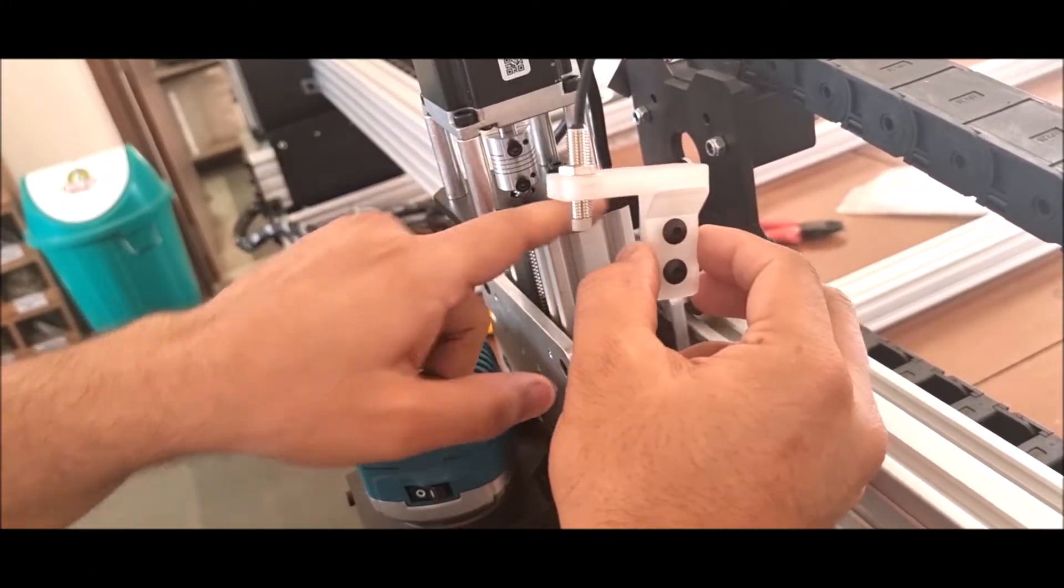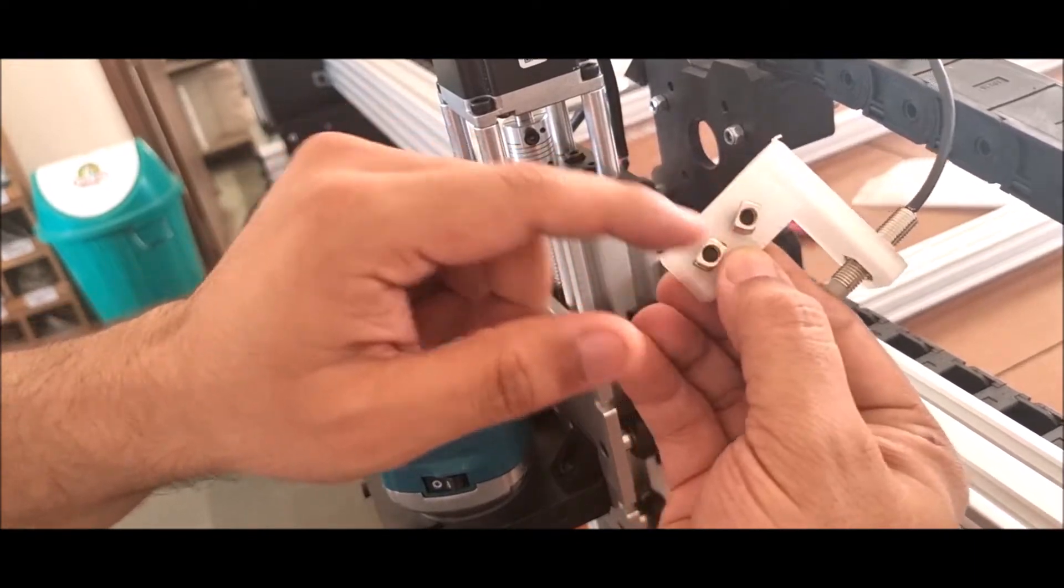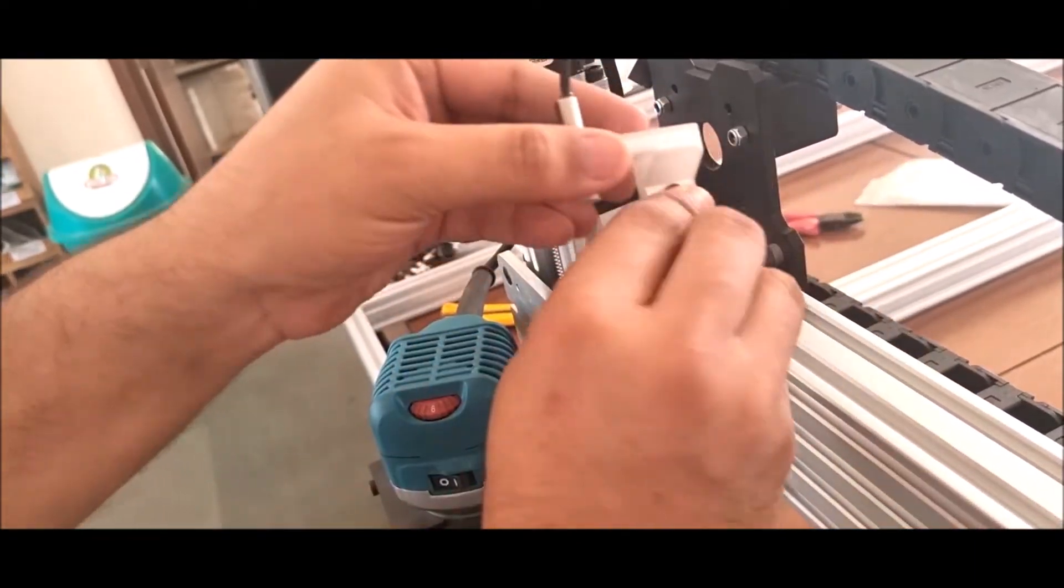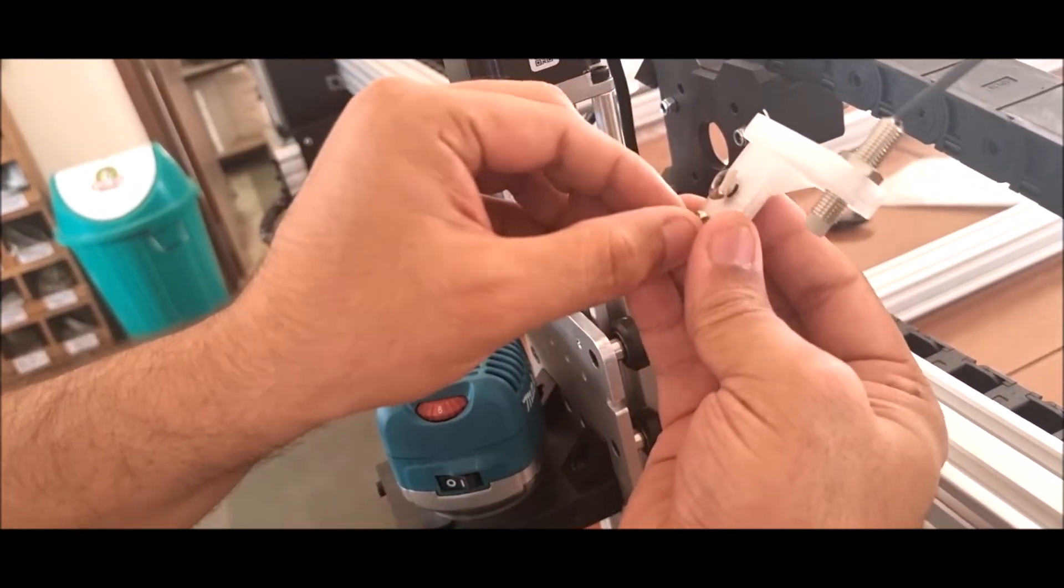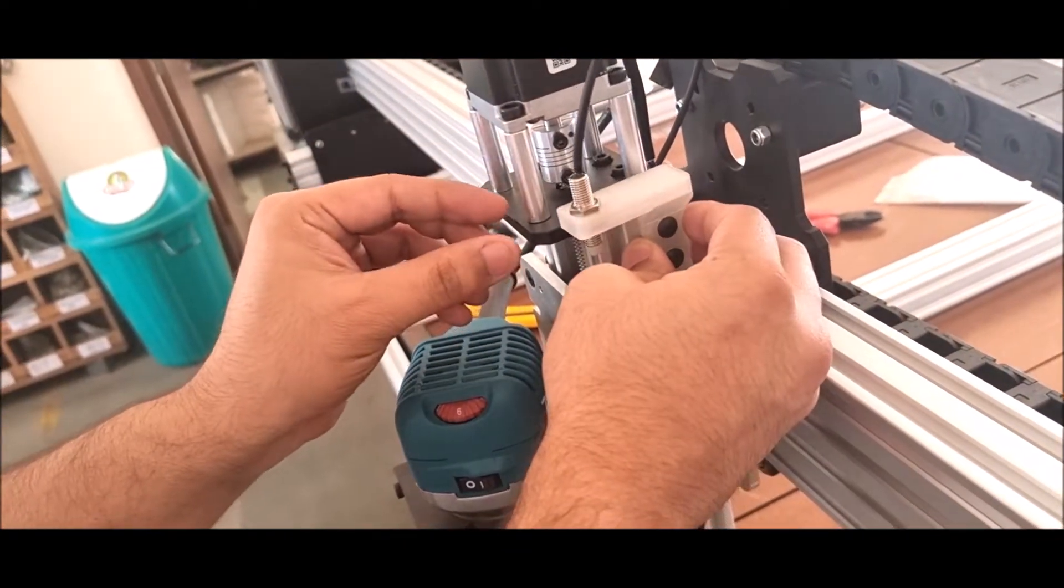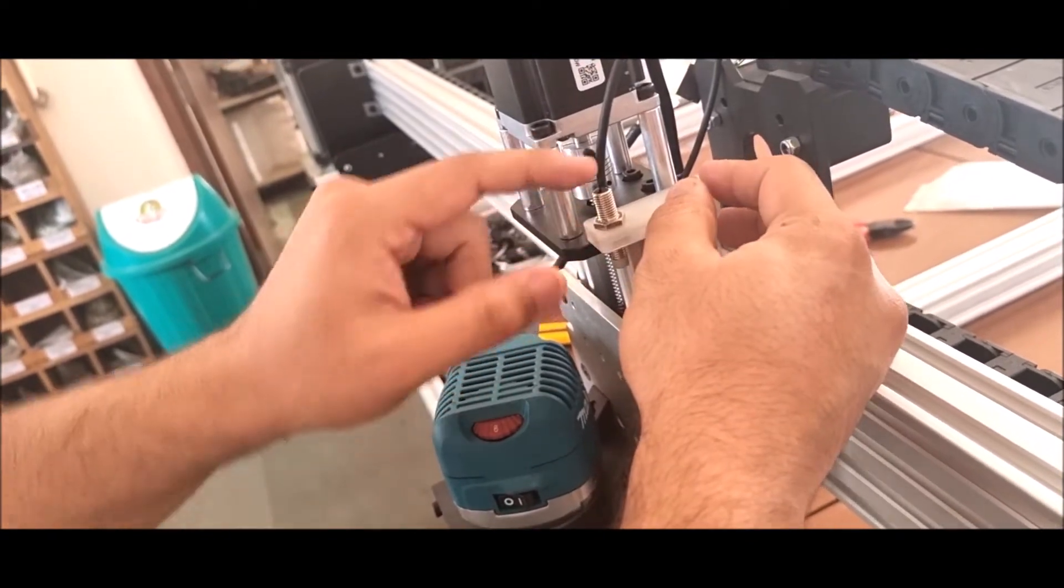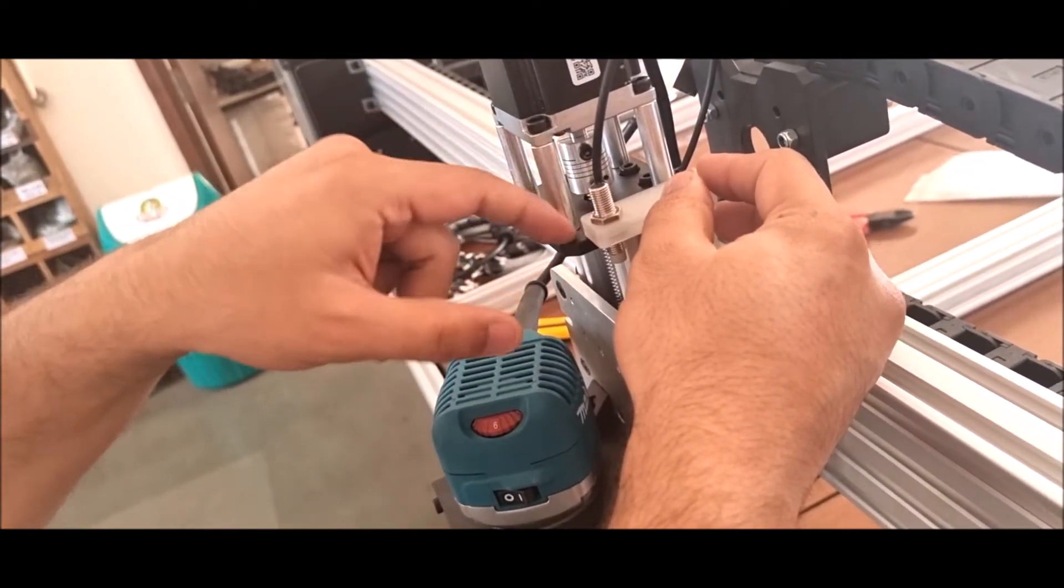This plastic part will be fitted on this plate here, and these T-nuts will go into this groove. Align them like this, then insert them in this groove and secure this plastic part